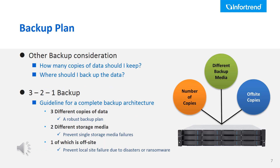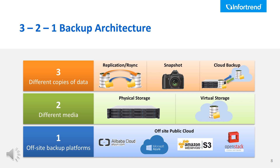Besides the RTO and RPO evaluation indicators, there are a few more questions to consider, such as how many copies of data should I keep and where should I back up the data? There is a backup guideline called the 3-2-1 backup architecture. It indicates that for a complete backup plan, the IT environment must have three different copies of data on two different storage media, and one of which is kept off-site. An IT environment has three different copies of data based on replication, snapshot, and cloud backup.